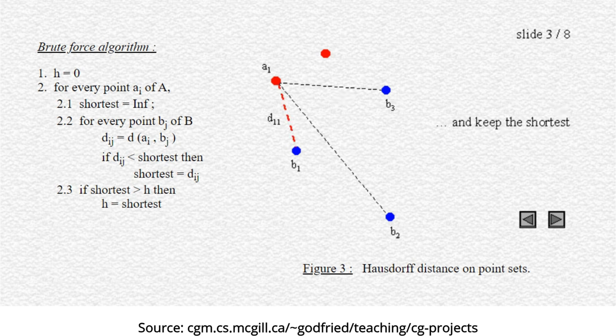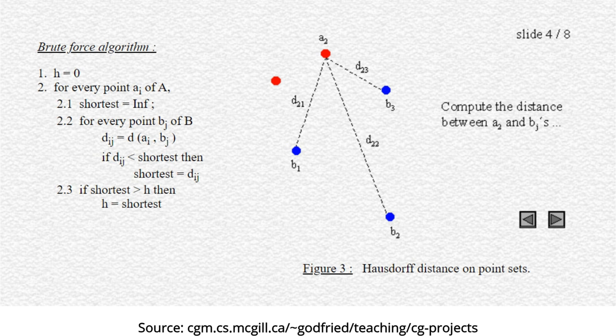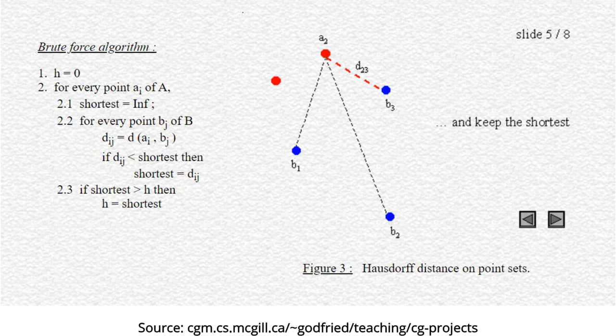We repeat this process for point a2 and then find the distances between a2 and b1, b2, b3, and then we keep the shortest distance out of all three. Once we have the collection of all the shortest distances between points in set A and points in set B...